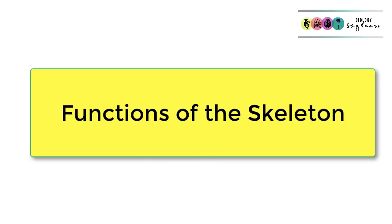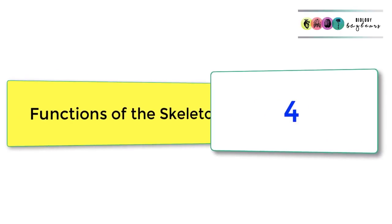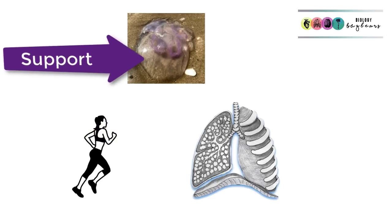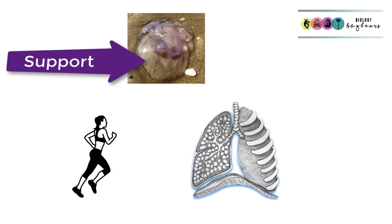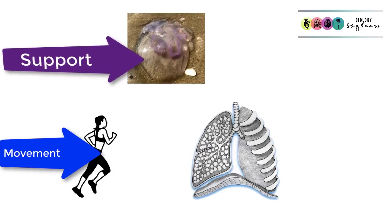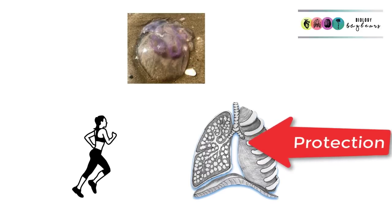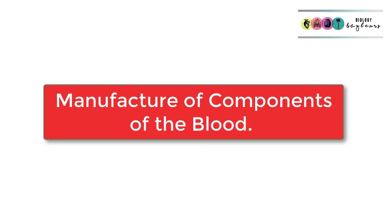Let's begin with the functions of the skeleton — there are four that you must be able to discuss. Function number one is support. Without the skeleton we would look something like this jellyfish here in the picture. The second is movement. The third is protection — think of the brain protected by the skull and the heart and the lungs protected by the ribcage.